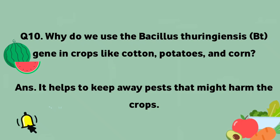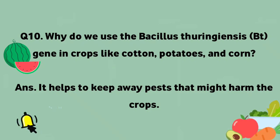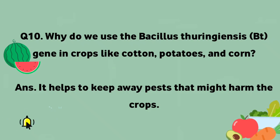Why do we use the Bacillus thuringiensis (Bt) gene in crops like cotton, potatoes, and corn? It helps to keep away pests that might harm the crops.